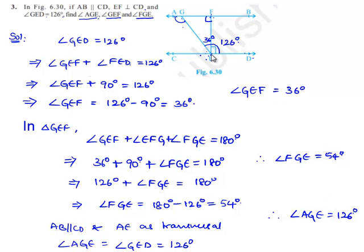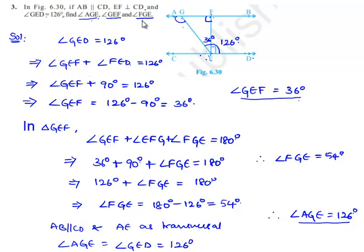Thus, we got the three unknown values that were asked: angle AGE is equal to 126 degrees, angle GEF is equal to 36 degrees, and angle FGE is equal to 54 degrees.